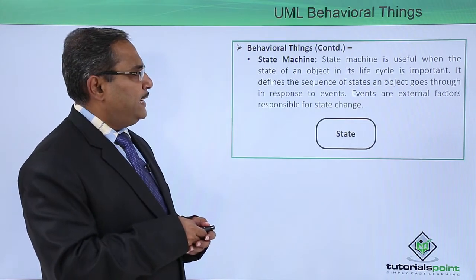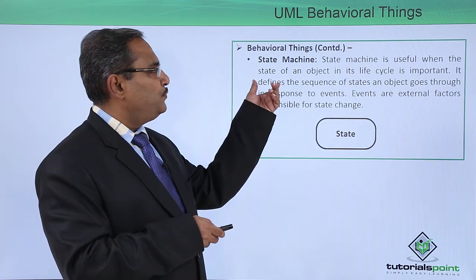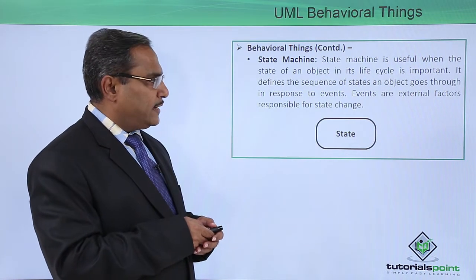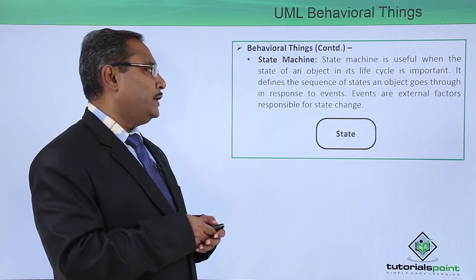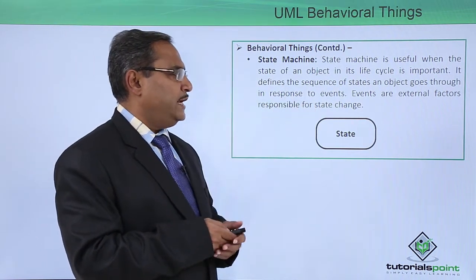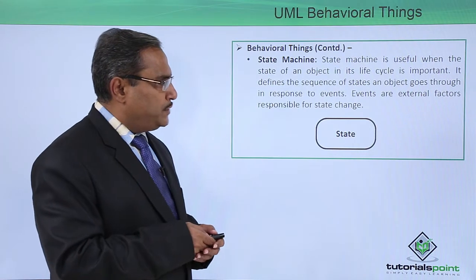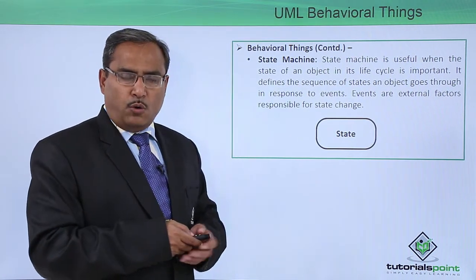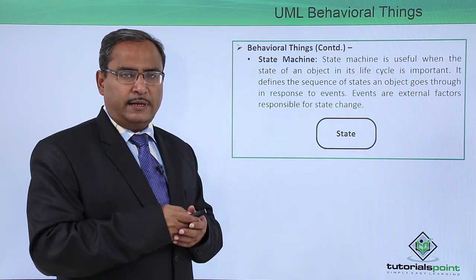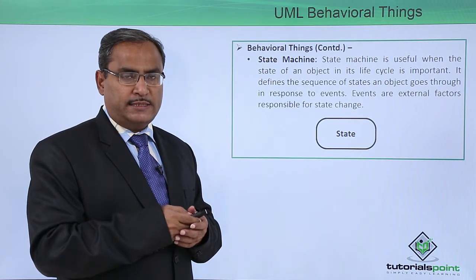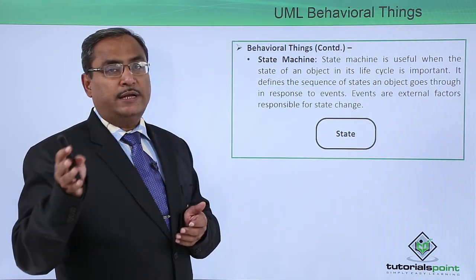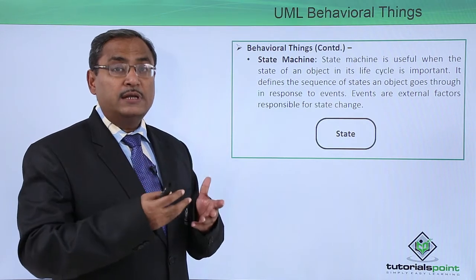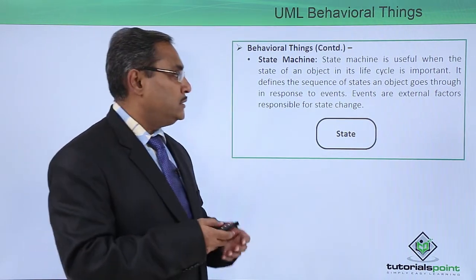Now we have the state machine. A state machine is useful when the state of an object in its life cycle is important. It defines the sequence of states an object goes through in response to events. One object will have multiple different kinds of states, and from one state to another there will be a state transition whenever some event has occurred.